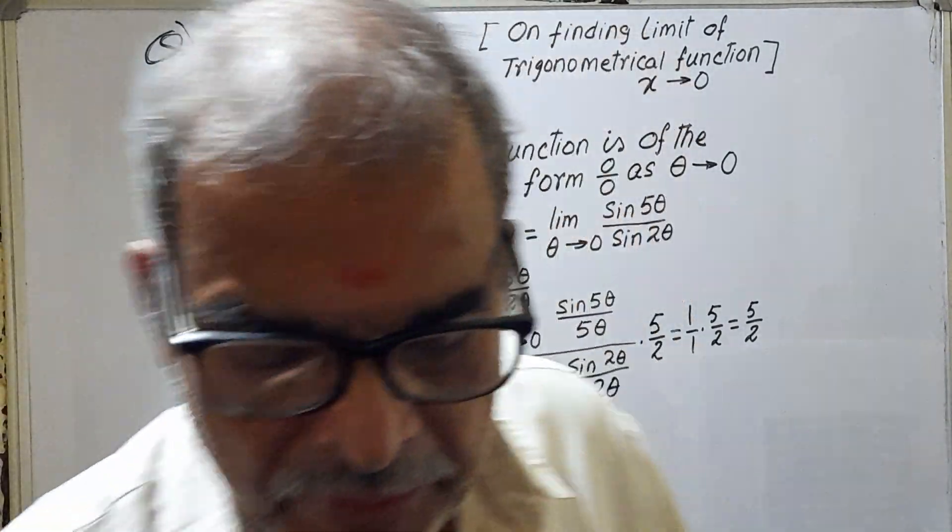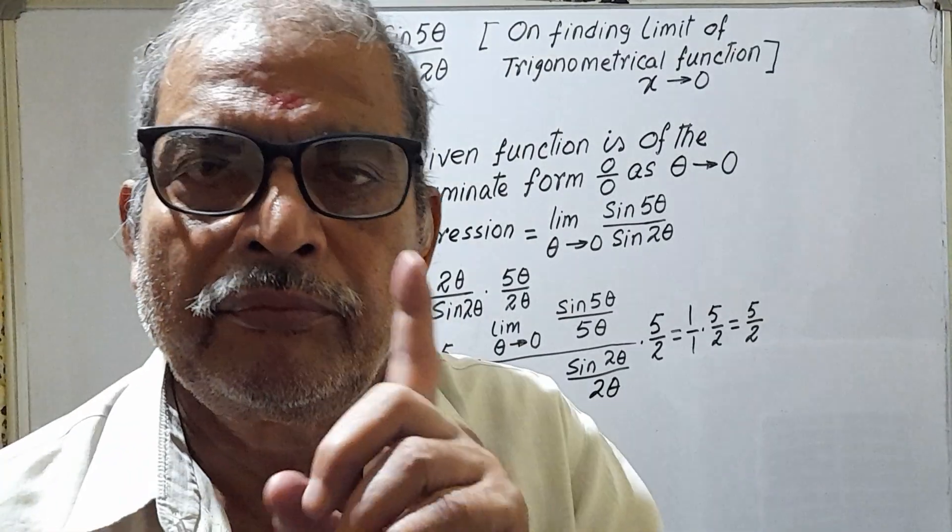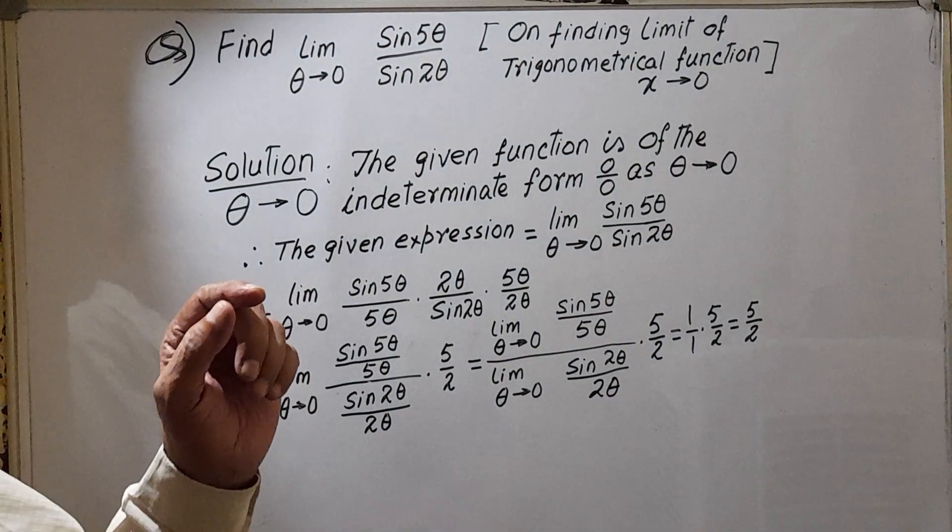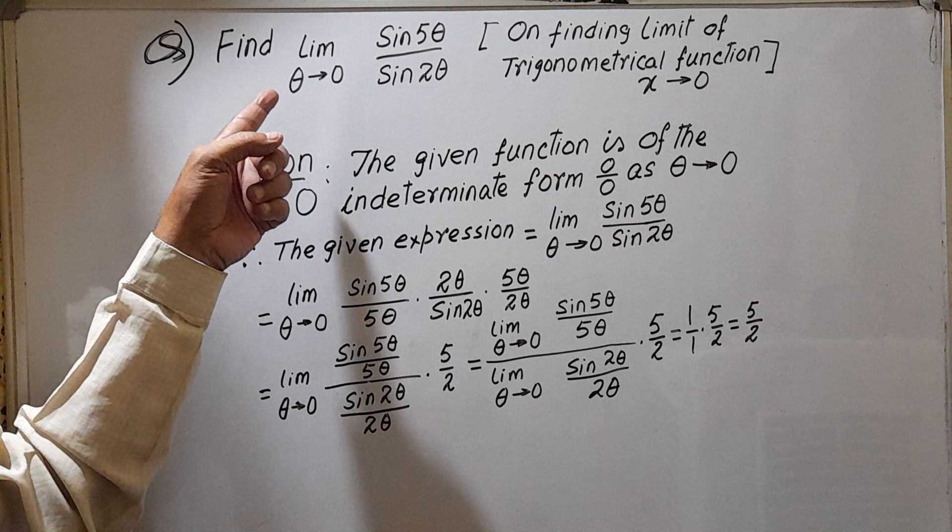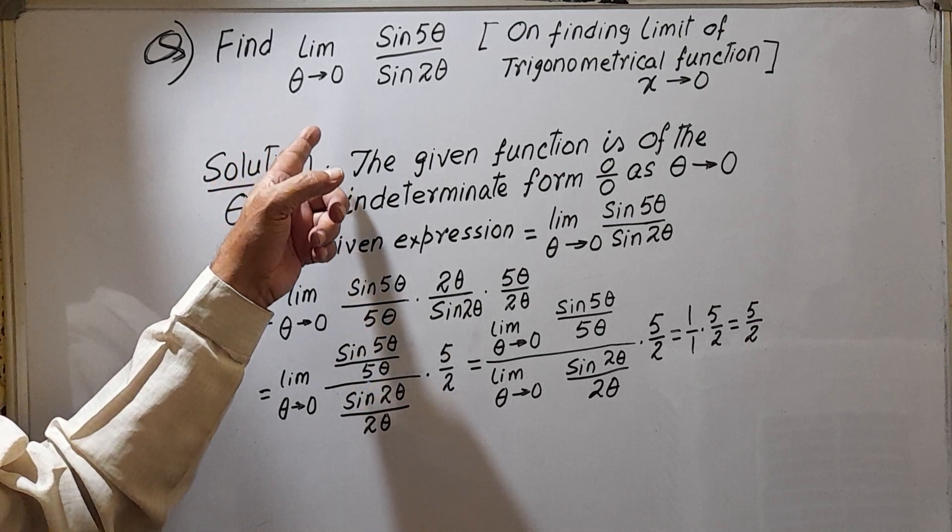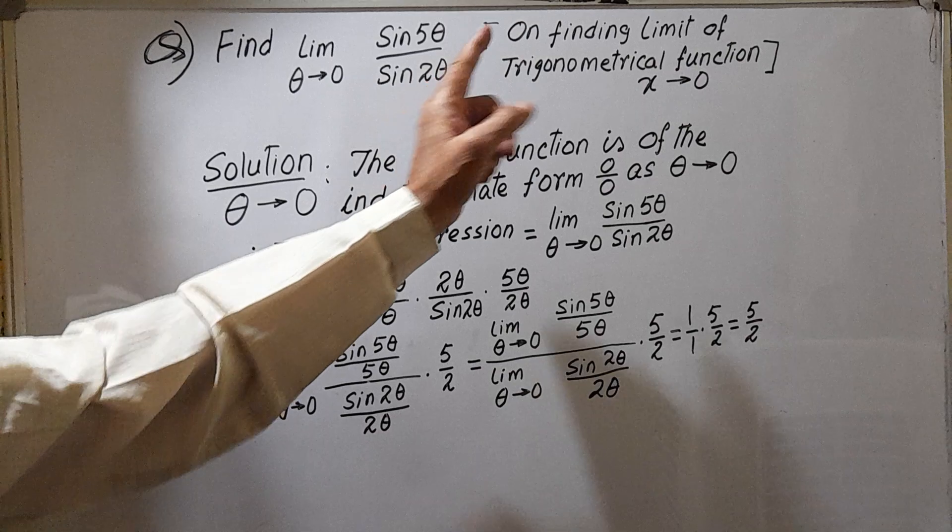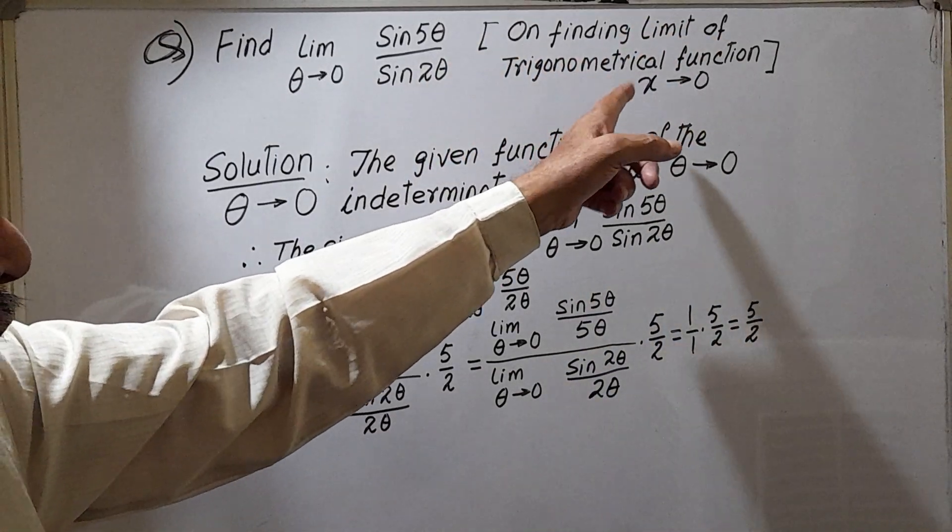This problem is started from class 11, 12 like this. So see what is the question here: find limit theta tends to 0, sin 5 theta by sin 2 theta, on finding limit of trigonometrical function.